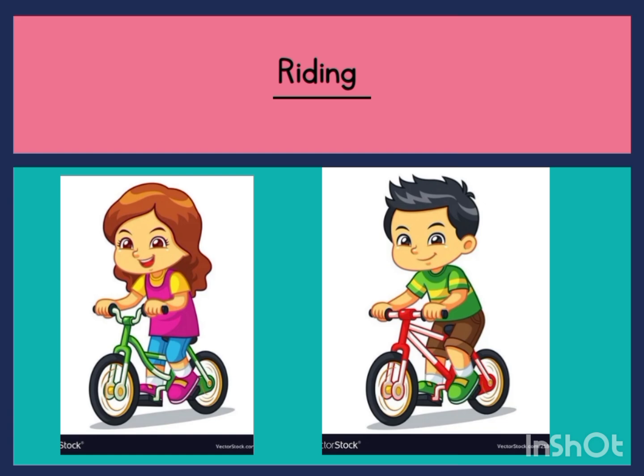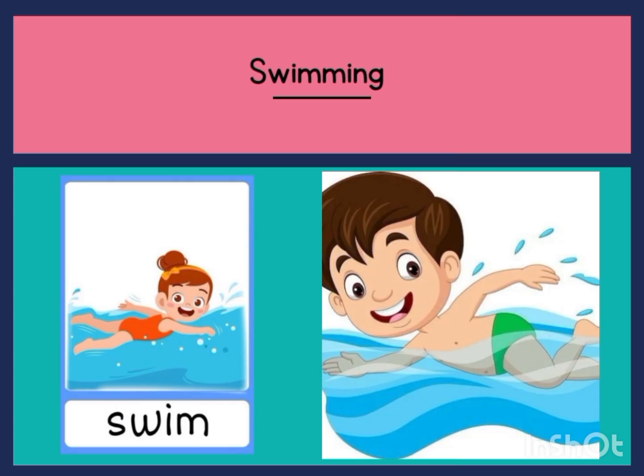Riding a bicycle — they are riding a bicycle. What action are they performing? They are riding. So riding is an action word. We also have swimming — they are swimming. What action are they performing? They are swimming. So swimming is an action word.